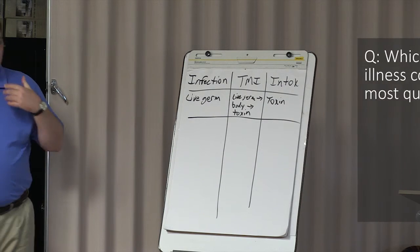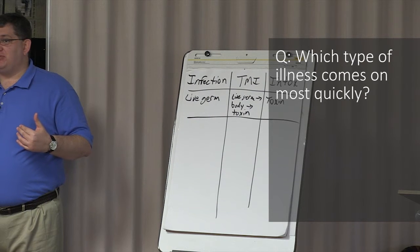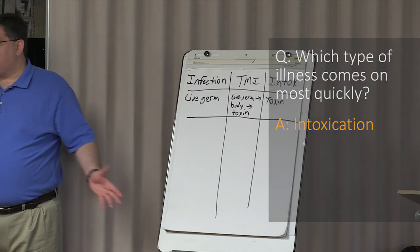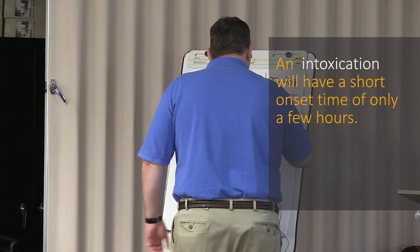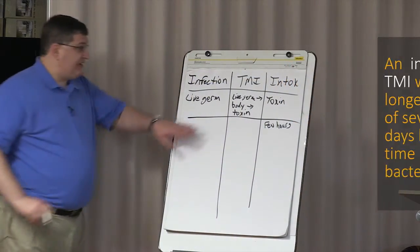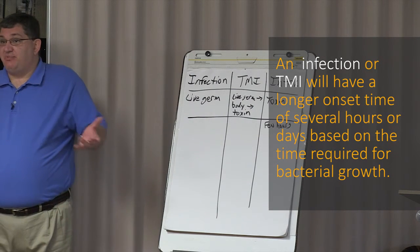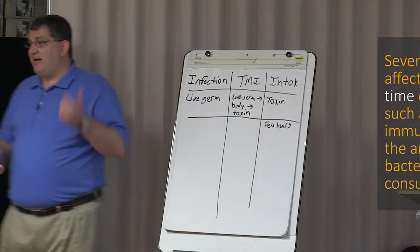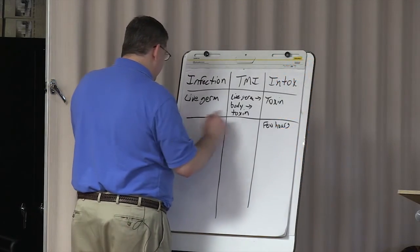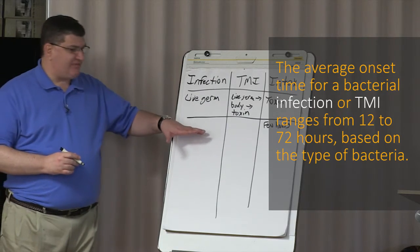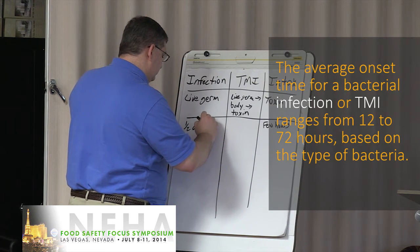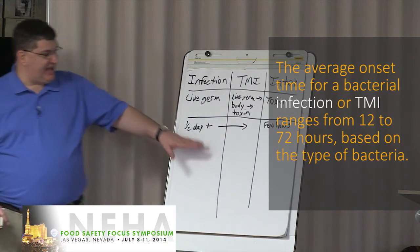So let me ask you this now. When you compare these illnesses, which of these is going to hit you the fastest? The infection and the TMI can take up to a couple of days. It depends on how much of a dose you get, how strong your immune system is, things like that. We're talking usually half day to two or three days. So I just say half day plus here.